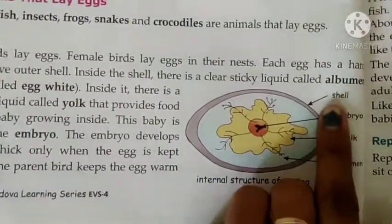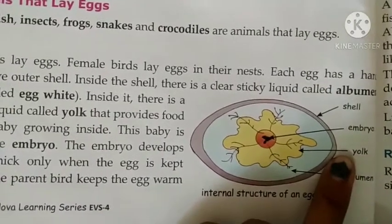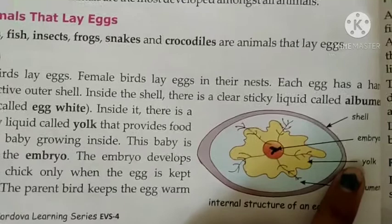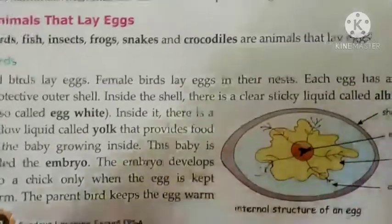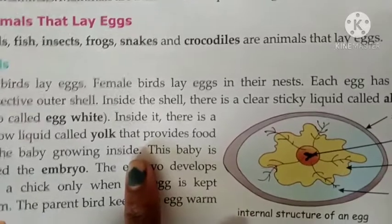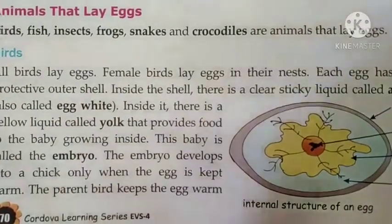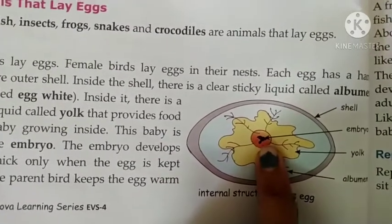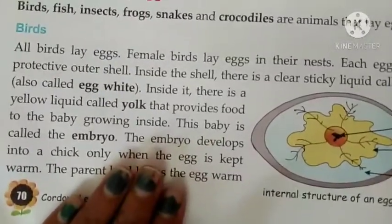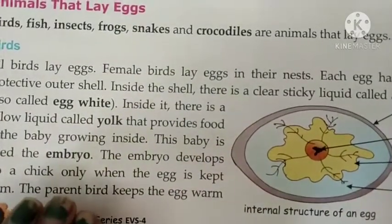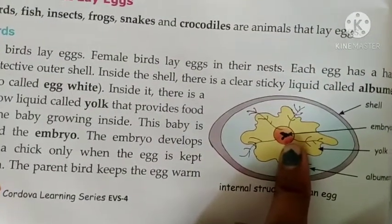So the egg has three parts: the outer shell, then the albumen (white liquid), and inside that the yellow yolk. The yolk provides food to the baby growing inside the egg until it grows big. This baby is called the embryo. The embryo develops into a chick only when the egg is kept warm.